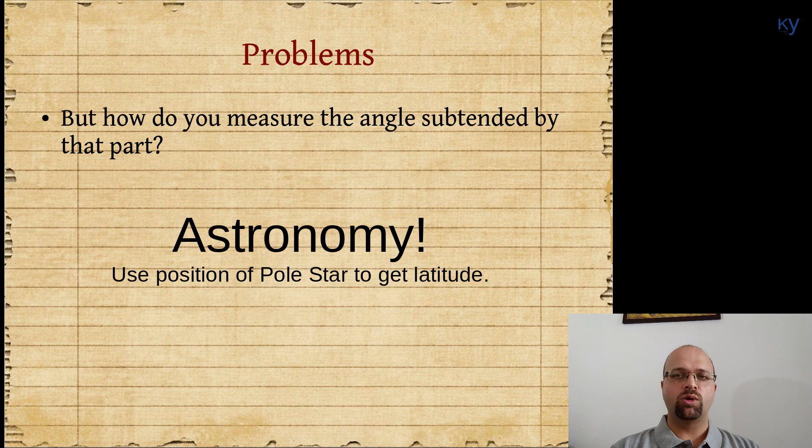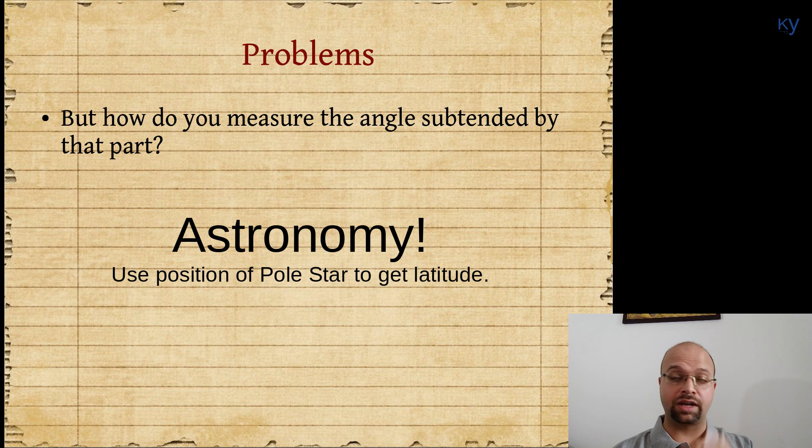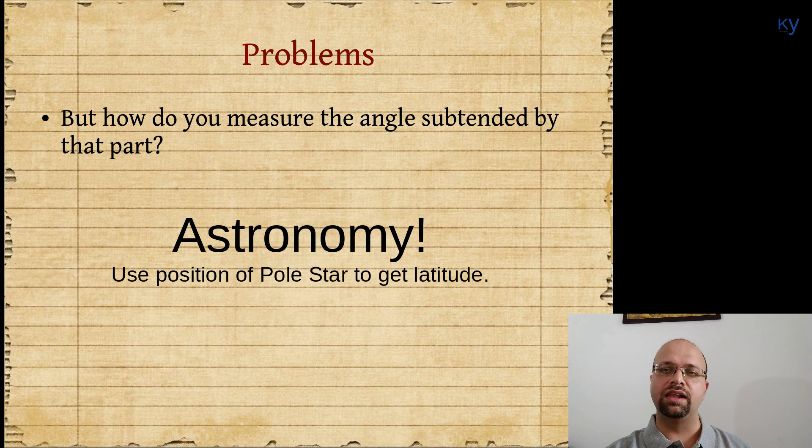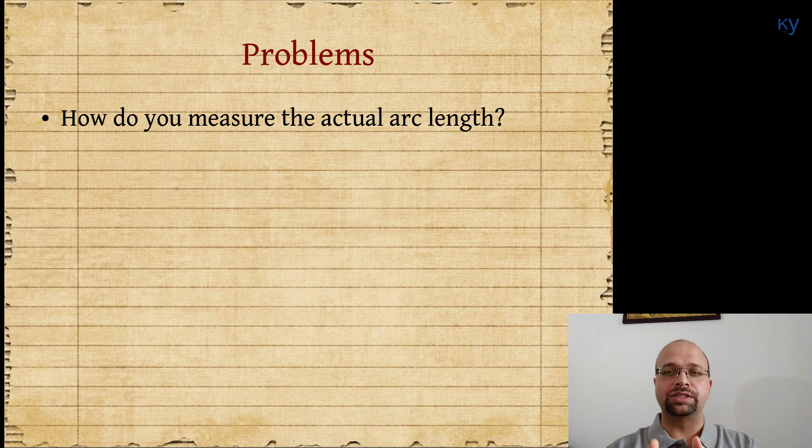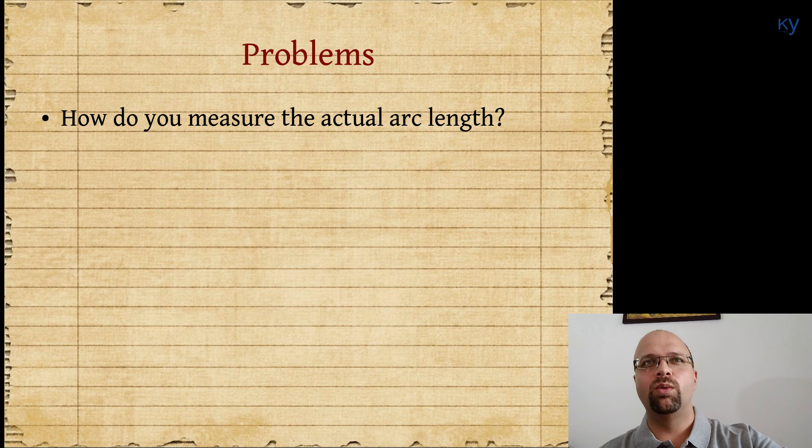The angle between the surface and the pole star is equal to the latitude where you are. If you are at the equator, the pole star will be exactly at the horizon. If you go say 10 degrees north of equator, the pole star will be 10 degrees above the horizon but it will remain fixed. That is how we can use astronomy to infer the angle between two places A and B.